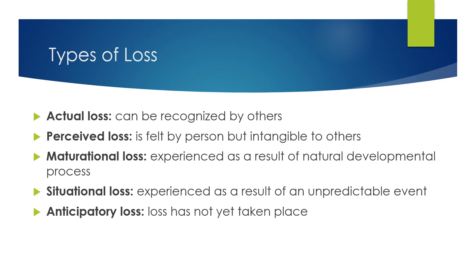Maturation loss occurs through the changes that come with aging and getting older. People grow up and they become siblings, so then they're no longer the only child. We lose our friends when we graduate high school, and we lose the freedom to do whatever we want when we become parents.